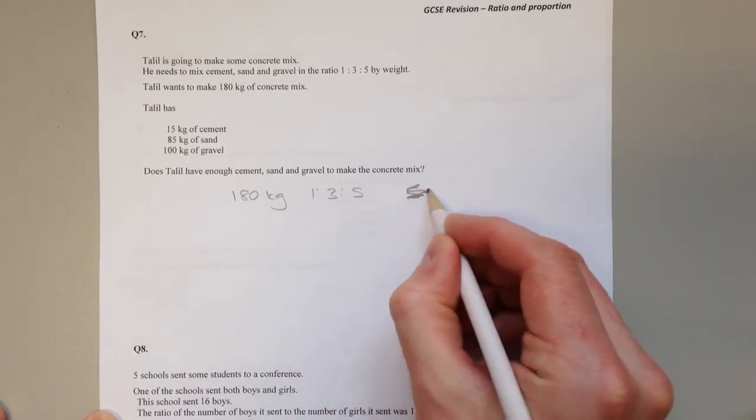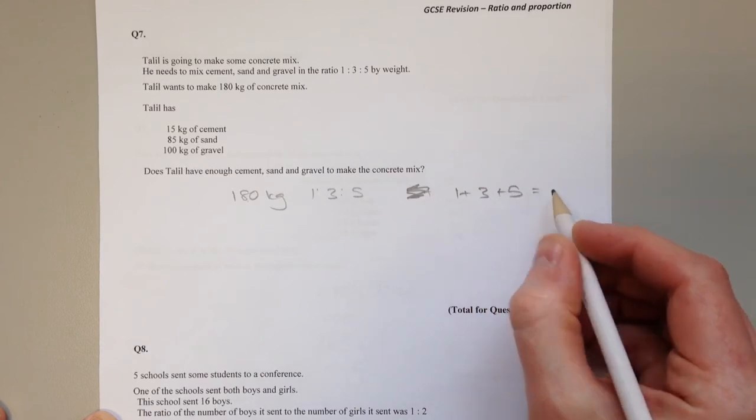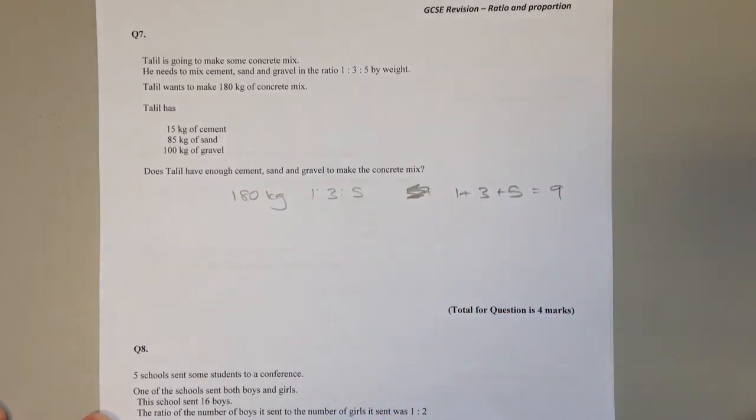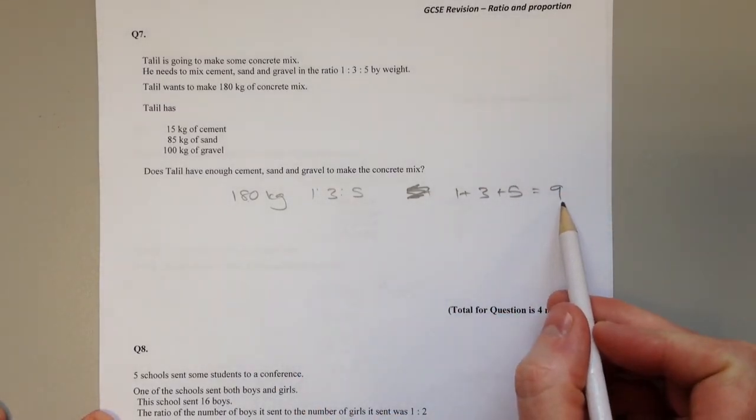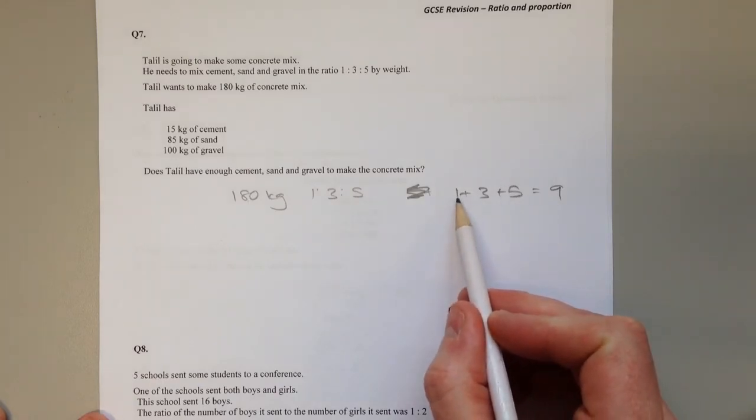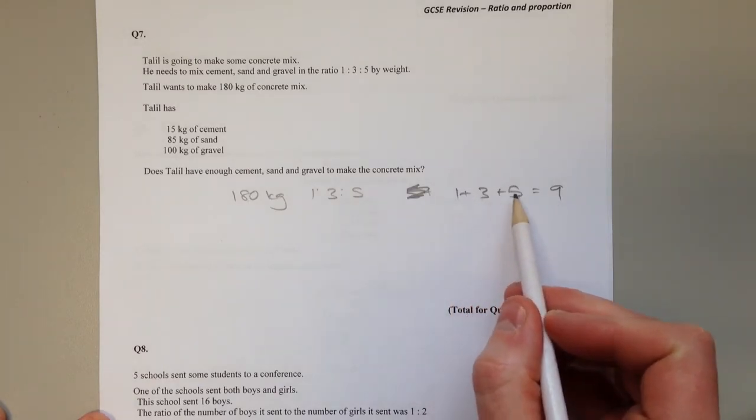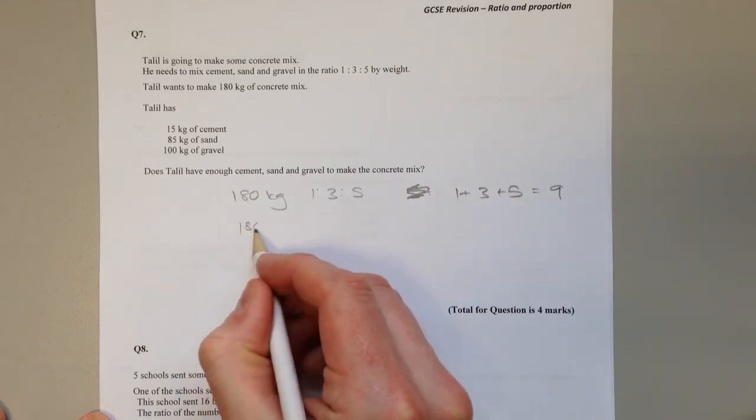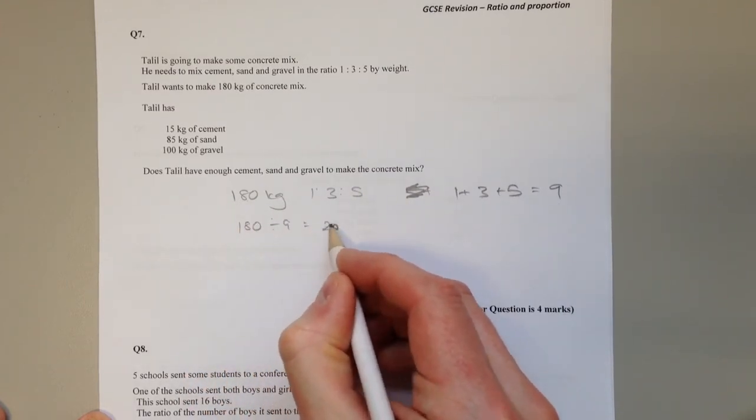Add together the 3 parts in the ratio. So to make 9 kilograms of concrete we need 1 kilogram of cement, 3 of sand, and 5 of gravel. How many lots of 9 are in 180? There's 20.